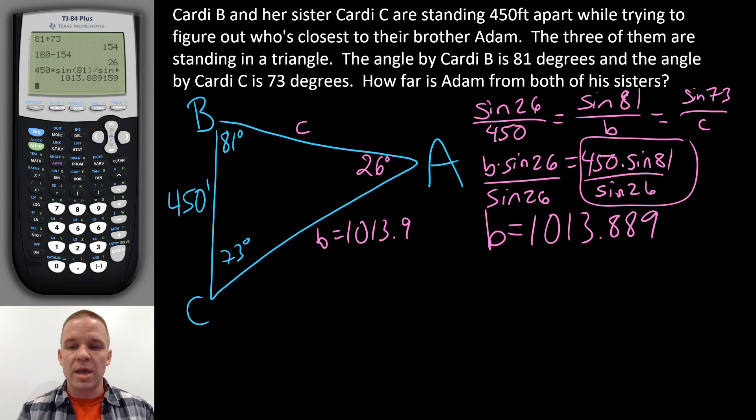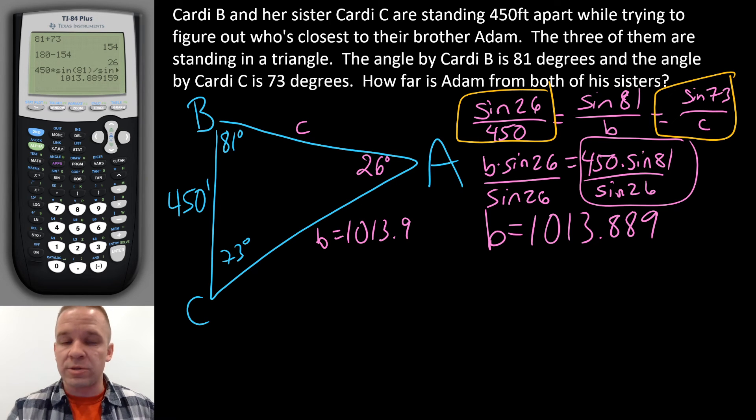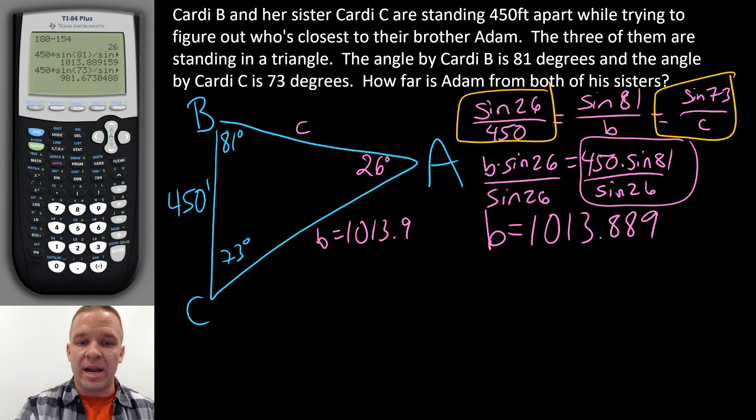Okay. We'll round to one decimal place. Now let's do the same thing, but now we're going to use the first one here and the last one here. So really the only thing that changes when I plug this into my calculator is I'm going to have sine of 73 times the 450 rather than that sine of 81. Everything else is the same. So if I hit enter, I get 981.67. Let's say 981.7 since we did one decimal place for the last one. Feet and feet. Beautiful.